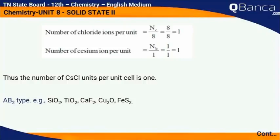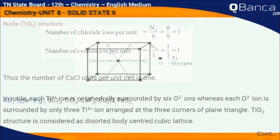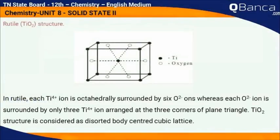AB2 type examples: SiO2, TiO2, CaF2, Cu2O, FeS2. Rutile — TiO2 structure.